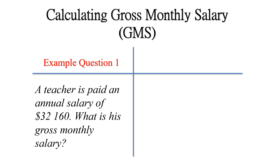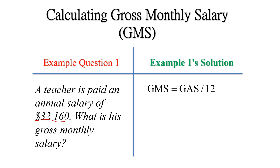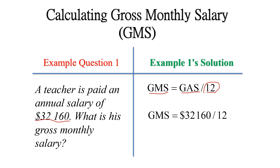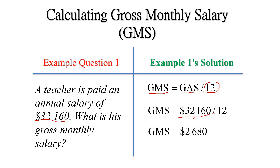Here we have an example question for calculating gross monthly salaries. A teacher is paid an annual salary of $32,160. What is his gross monthly salary? GMS = GAS ÷ 12, so $32,160 ÷ 12 = $2,680. That is the gross monthly salary for the teacher.